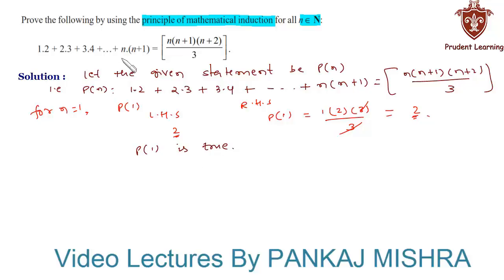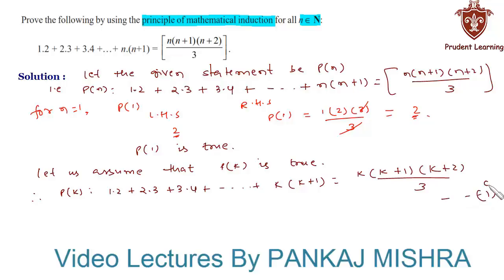Now let us assume that P(k) is true for some positive integer k. Therefore we have P(k) such that 1·2 + 2·3 + 3·4 all the way up to k(k+1) equals k(k+1)(k+2)/3. Let us call this equation as equation 1.